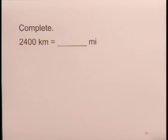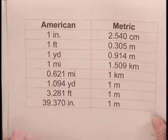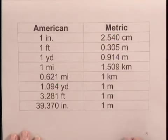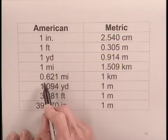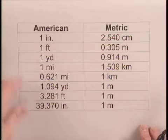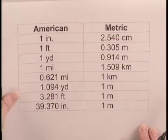We need to know what the conversion factor is from the metric to the American. From the table here, we see that 1 kilometer is equal to approximately 0.621 miles. So that's the conversion factor we'll use.